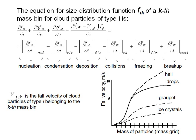The general form of the equation for size distribution is written here. F is the size distribution, K and I indicate the type and number of hydrometeor. We have seven types of ice and water, plus aerosols. Different microphysical processes are described using equations based on first principles, so we try to avoid utilization of semi-empirical parameterizations.